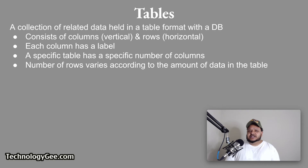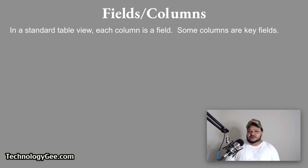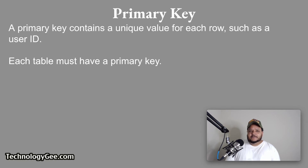A table is a collection of related data held in a table format within a database. It consists of columns, which are vertical, and rows, which are horizontal. Each column has a label. Any specific table has a specific number of columns, but the number of rows varies according to the amount of data in the table. Each row in a table is a record. In a standard table view, each column is a field. Some columns are called key fields. A primary key contains a unique value for each row, such as a user ID, and each table must have a primary key.